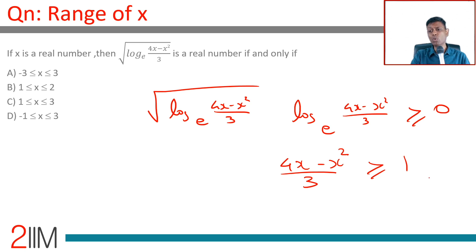So (4x - x²)/3 should be greater than or equal to 1, which means 4x - x² should be greater than or equal to 3. Rearranging: 4x - x² - 3 should be greater than or equal to 0, with the minus 3 coming over to this side.